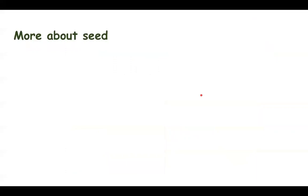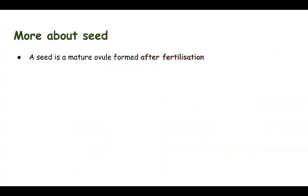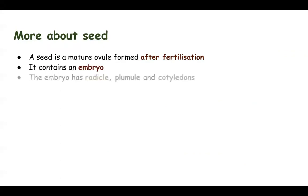There are certain key points to know about seeds. Number one: a seed is a mature ovule, formed after the process of fertilization has taken place. It contains an embryo — the embryo is the future plant, which will later form the future root and the shoot.